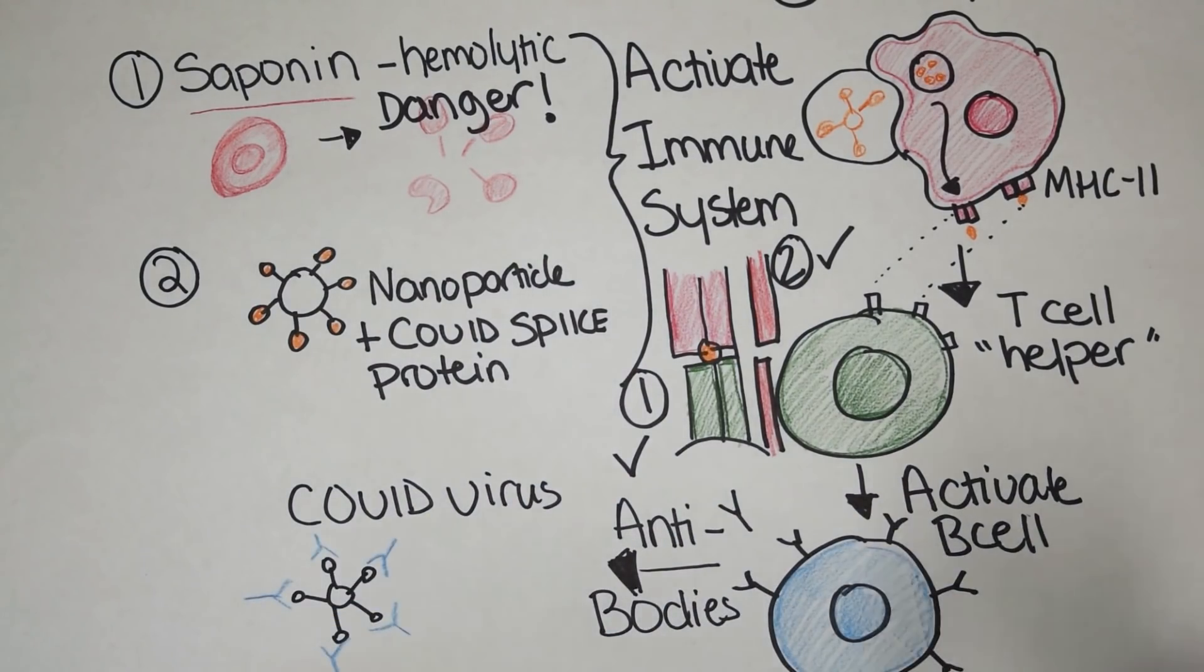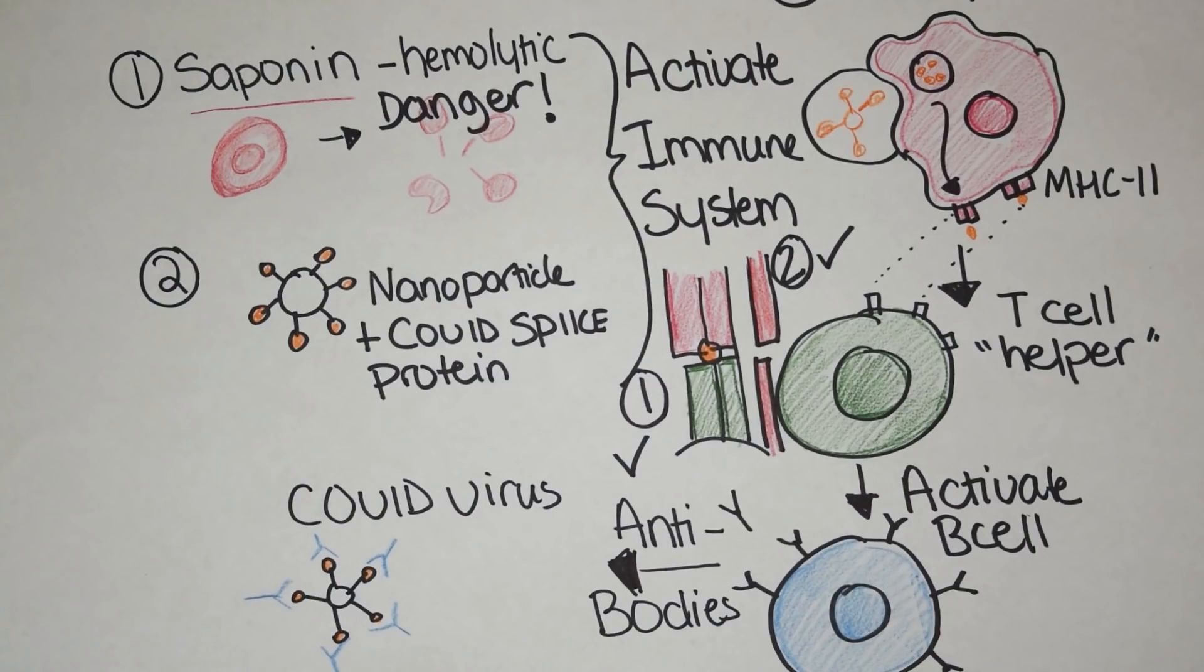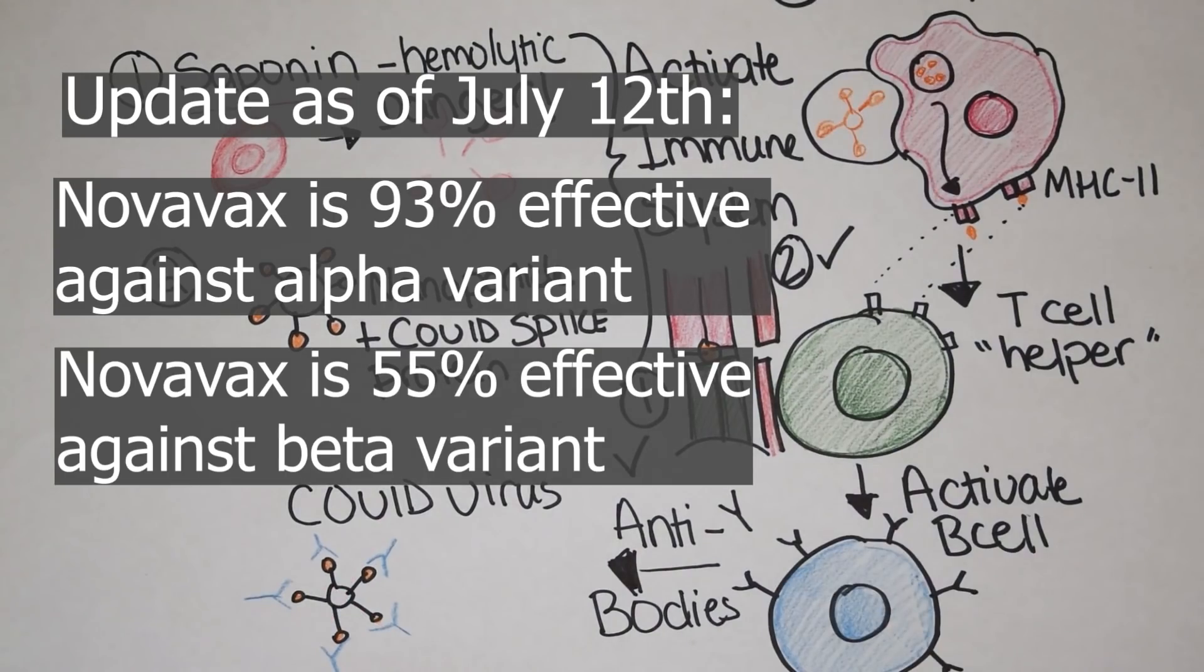One con I do want to mention is that the Novavax vaccine is effective towards the original coronavirus. It's not as effective against the variants. It varies between 86% and 50% effective. So that is a detriment I want to mention.